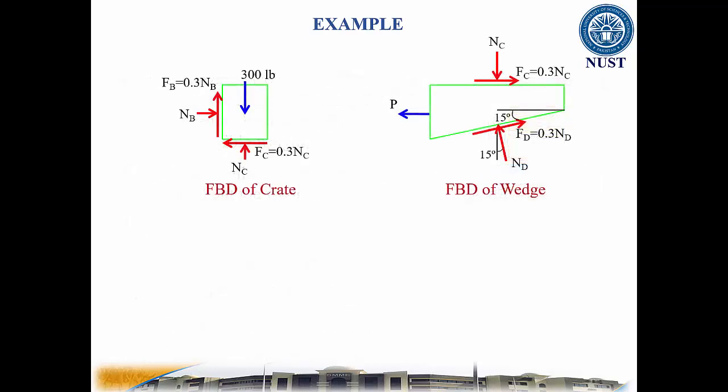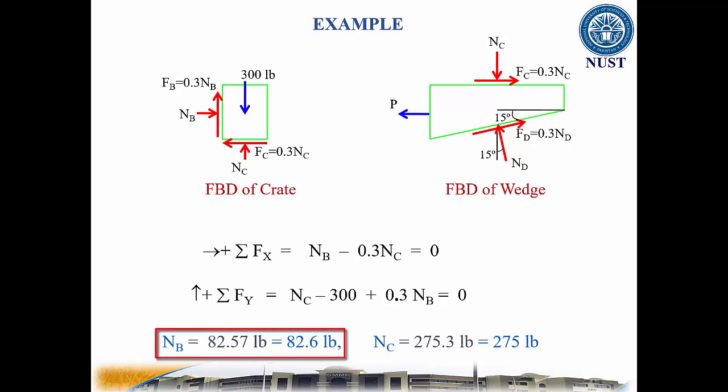The free body diagrams of crate and wedge are shown in these figures. Applying the equations of equilibrium to the crate in the x and y direction and solving these two equations simultaneously, it yields Nb equal to 82.6 pounds and Nc equal to 275.3 pounds.